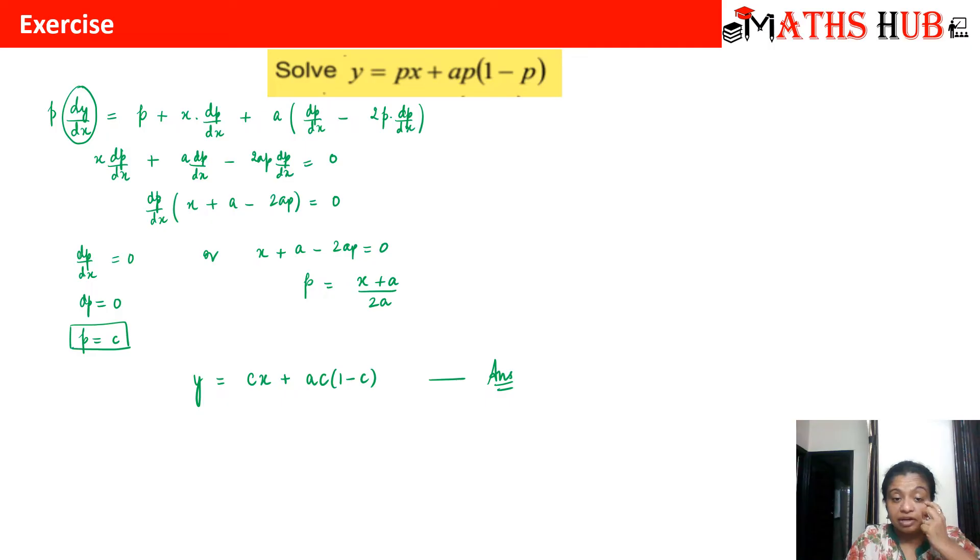From whichever equation you are able to calculate p quickly, just evaluate that p and put it back in the equation. You need to eliminate p between the equations and you get your answer. You could have also substituted this value in this expression and you will have got another solution.